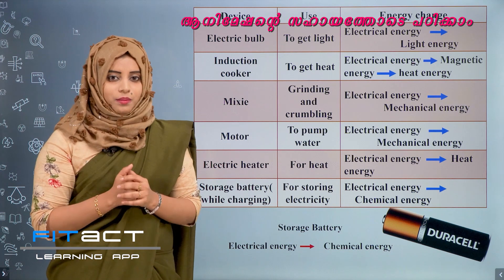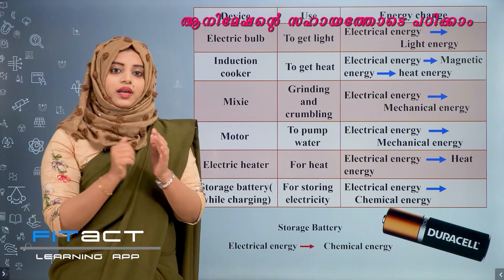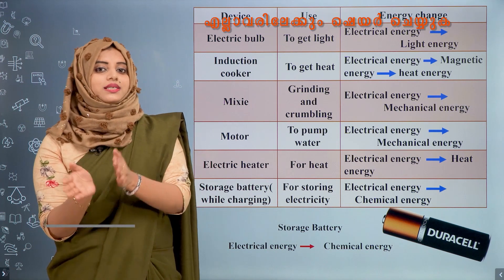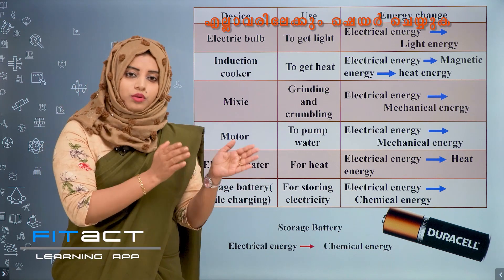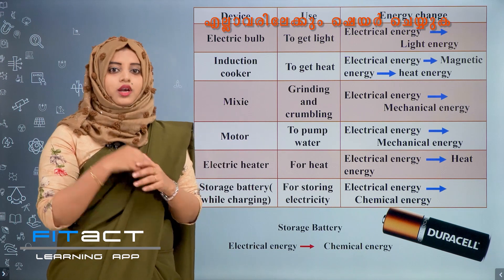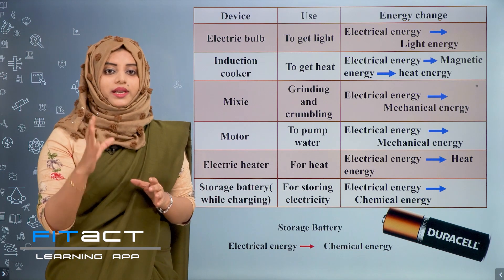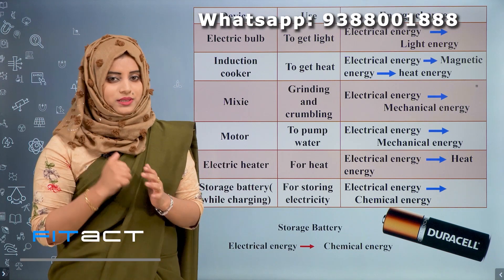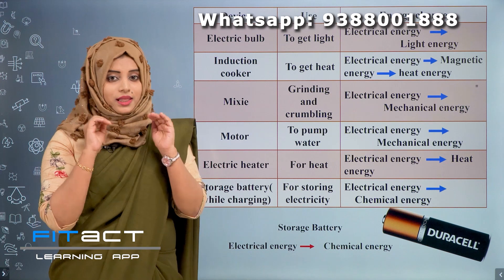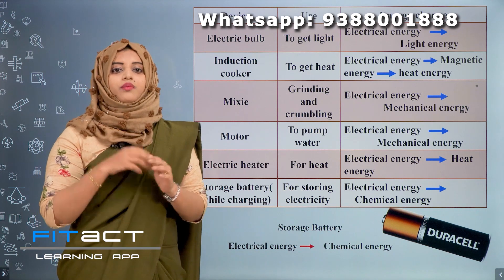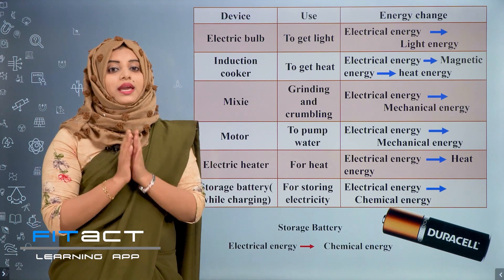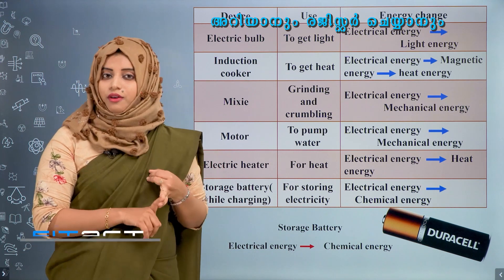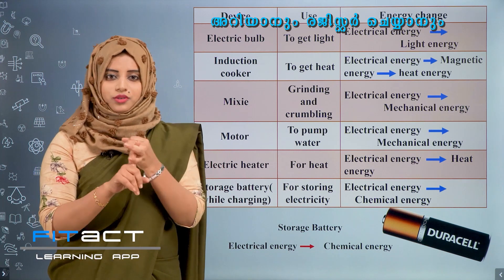For example, in electric heaters, electrical energy is converted into heat energy. So here, the effect of electric current is heat — the heating effect. In this chapter, we go through the heating effect and lighting effect of electric current.